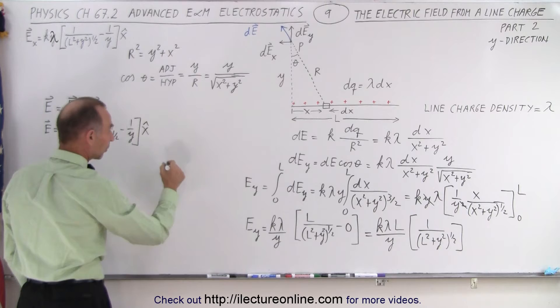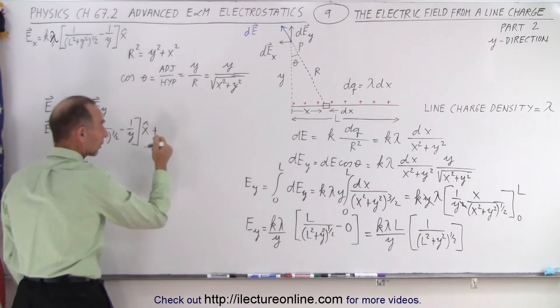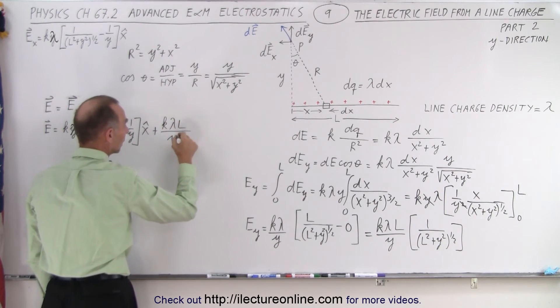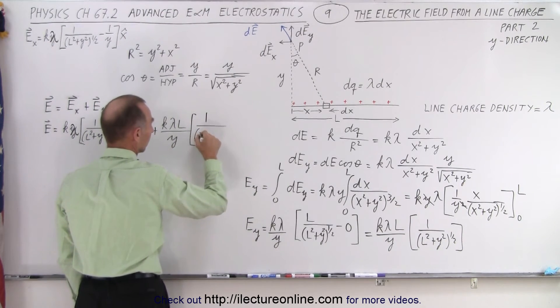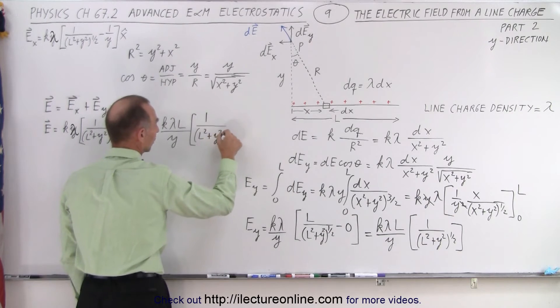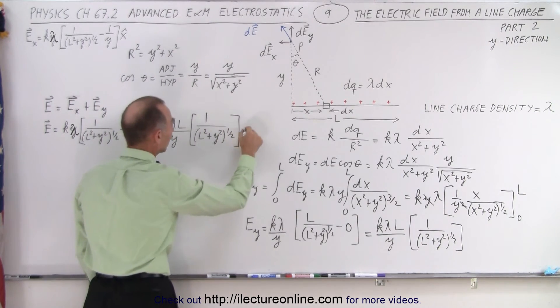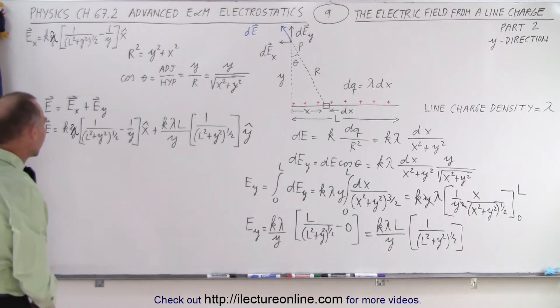And that gives me plus, because the y direction is in the positive y direction. So we have k lambda L over y times 1 over L squared plus y squared to the 1 half power, like this, and in the positive y direction. Now, is there some commonality here?